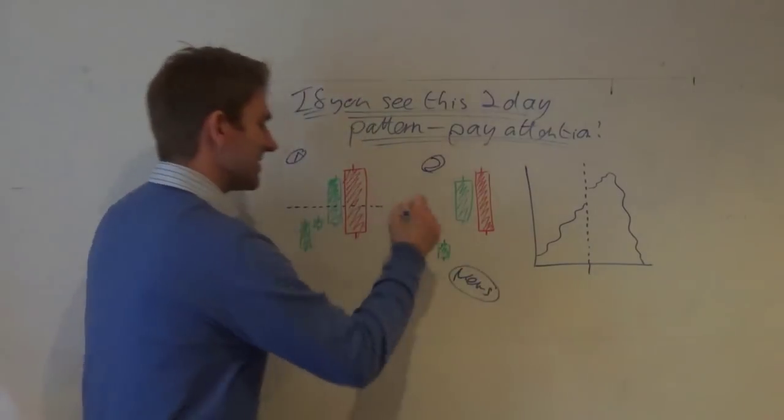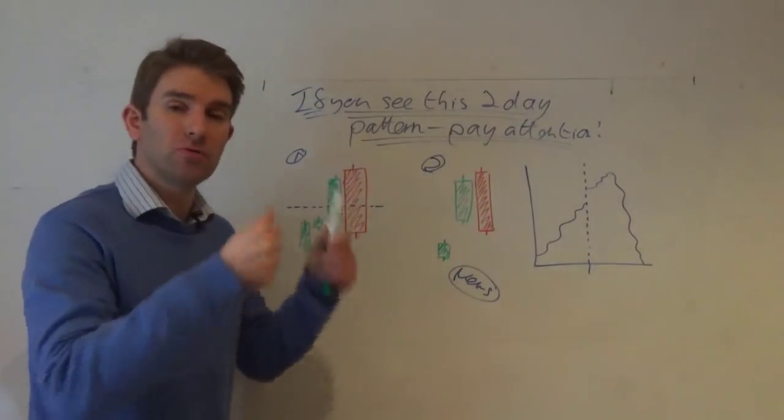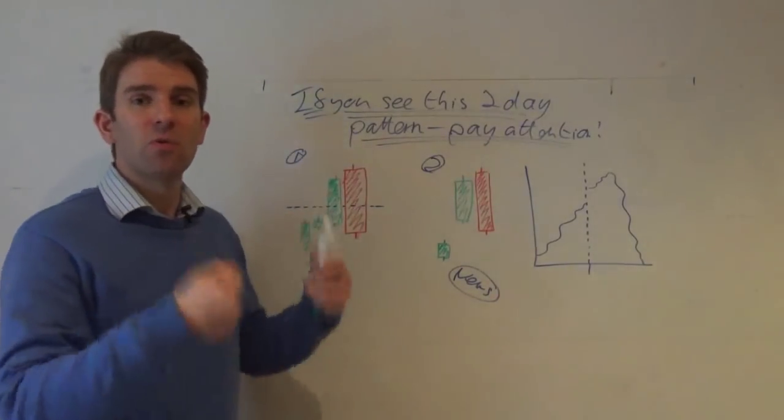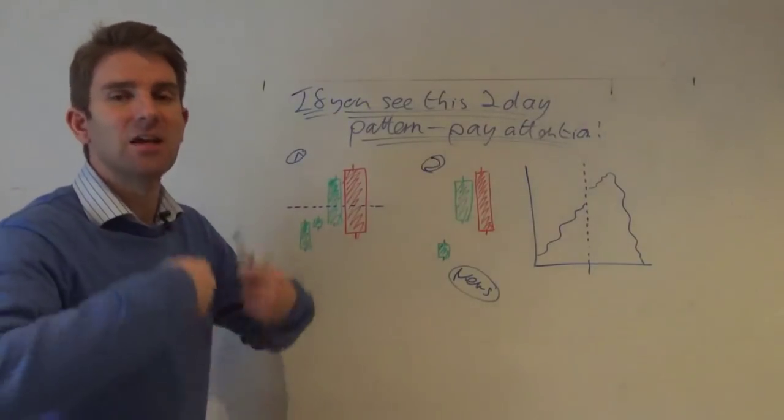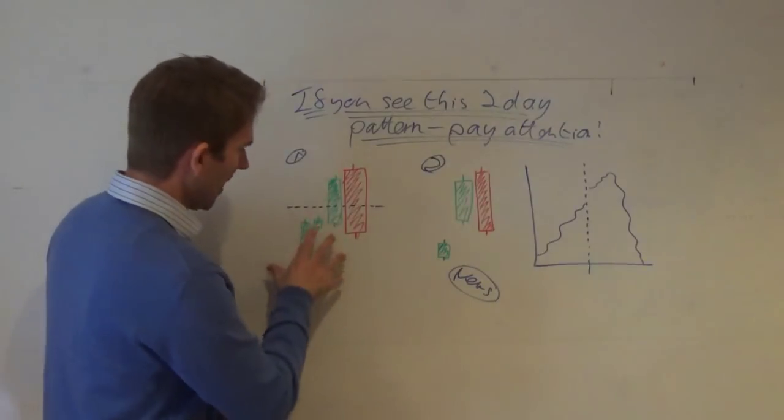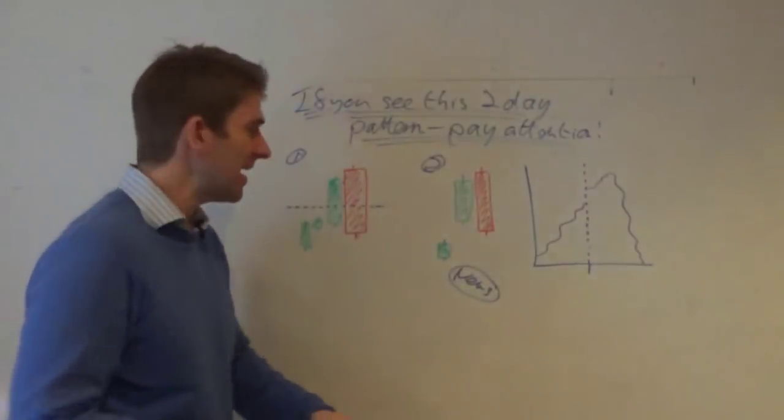The reason we have to have eyeballs on this is because it only works when we've got volume, participants, and people involved in the trade. In scenario one, we have a good push to a really key level - that could be a multiple high, could be a whole number, could be a level that everyone's looking at.